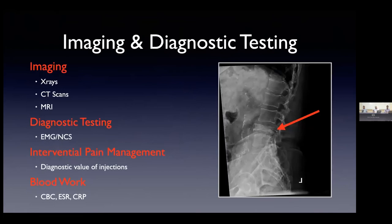Everybody wants a test these days. What can we order? X-rays, CAT scans, and MRIs are the three basic imaging modalities we use to evaluate patients. Sometimes you will hear that you can't get an MRI until you get an X-ray — from my perspective as a neurosurgeon, that is driven by insurance companies, not by me. If the clinical concern is great enough, we can push to get the appropriate testing in a timely manner — and I'm going to show you why that's important in a minute.